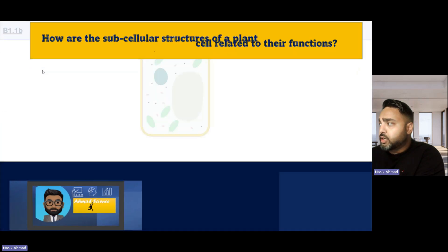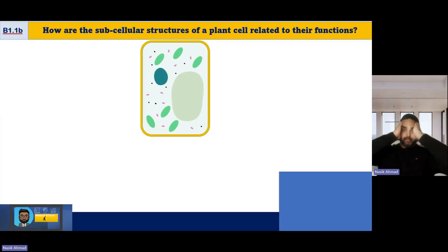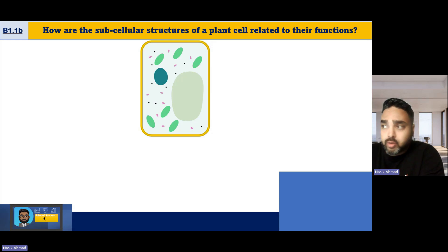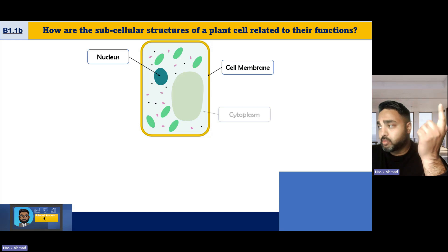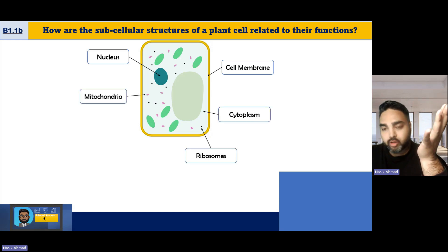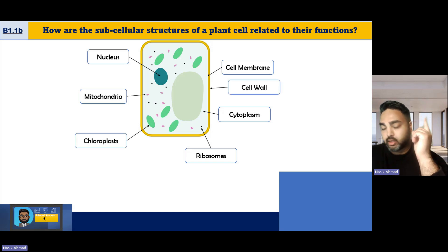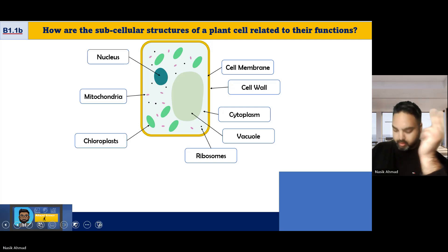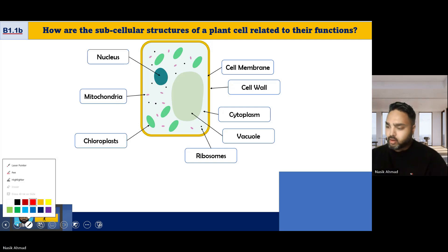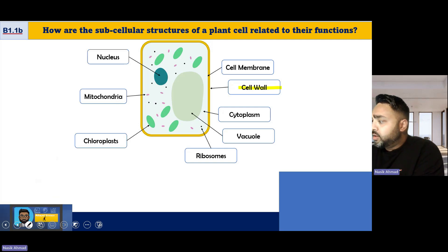The next thing we need to get our head around is plant cells. Organelles are what are inside the cells. You've got the five things inside all animal cells: nucleus, cell membrane, cytoplasm, mitochondria, and ribosomes. The three additional parts of a plant cell are the cell wall, the chloroplast, and the vacuole.